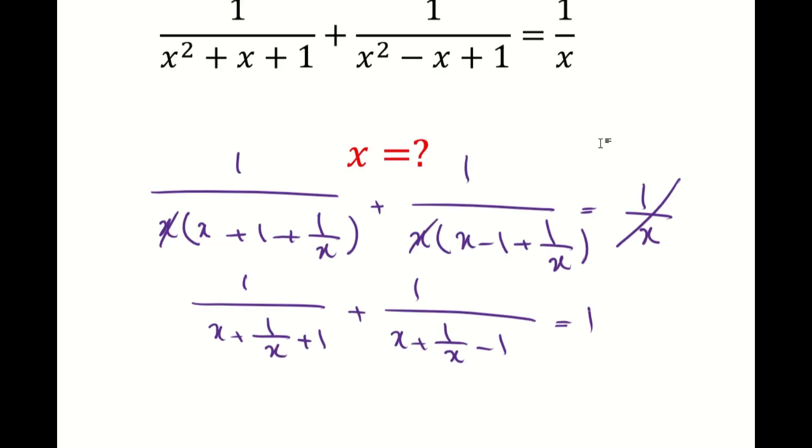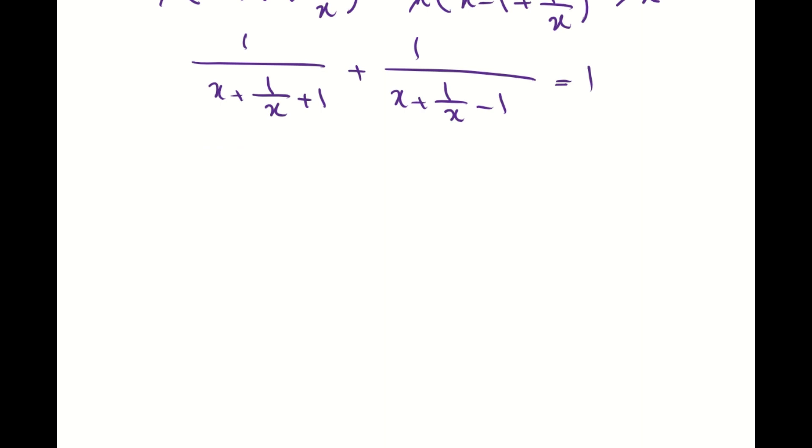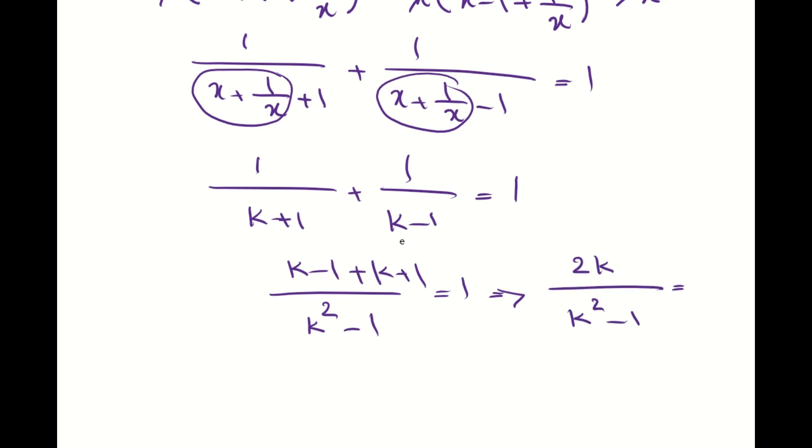Now I am going to start with using a new variable. Let's assume that x plus 1 over x here is a new variable like k. So I will have 1 over k plus 1 plus 1 over k minus 1 equals 1. And here I can say that I end up with a new quadratic equation. Basically, I will end up with 2k over k squared minus 1 equals 1.